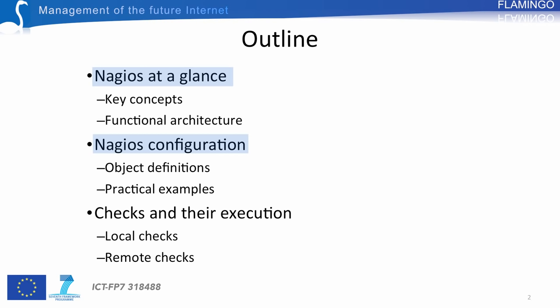The third part is about checks and their execution. Checks play an important role in Nagios as they are responsible for assessing services. You will see how to perform checks locally or remotely using dedicated agents such as NRPE or NSCA, which are part of Nagios.